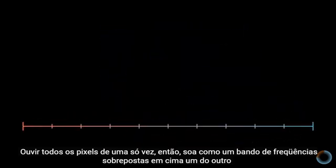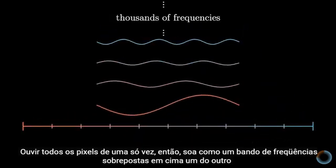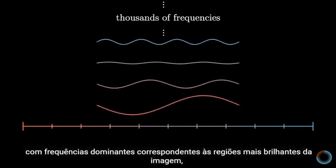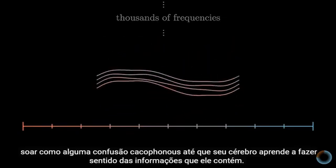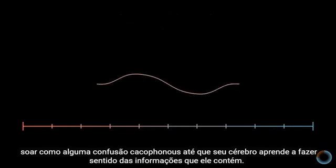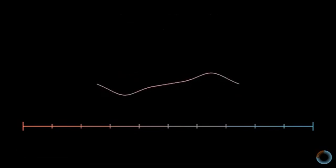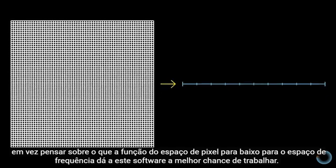Listening to all of the pixels all at once would then sound like a bunch of frequencies overlaid on top of one another, with dominant frequencies corresponding to the brighter regions of the image, sounding like some cacophonous mess until your brain learns to make sense out of the information that it contains. Let's temporarily set aside worries about whether or not this would actually work, and instead think about what function from pixel space down to frequency space gives this software the best chance of working.